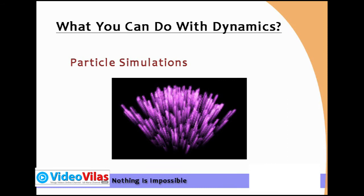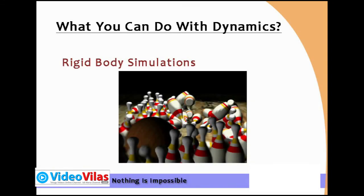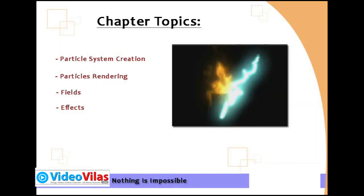What are the other things? Rigid body simulations. For example, you can do simulations with ten to fifteen hard balls colliding. That is something you can do with rigid body dynamics. That is what we are doing in this chapter.